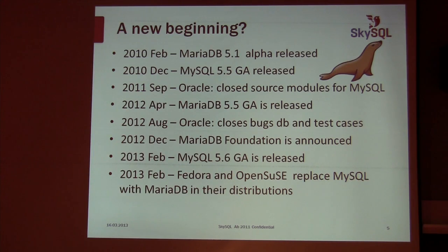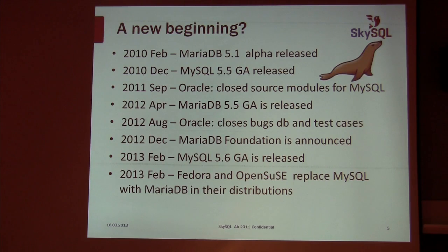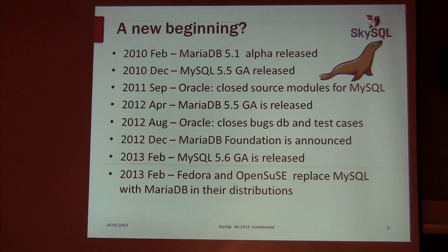In August 2012, Oracle had already started closing the bug database, but now they started closing test cases — they were no longer released publicly. This upset the Linux distributions, because they want openness: they want to know what's going on in a new MySQL version, what are the test cases, which bugs are fixed. This information was no longer available. So in February, Fedora and OpenSUSE announced they were going to replace MySQL with MariaDB in their distributions, because MariaDB is open — bugs database is open, test cases are open.